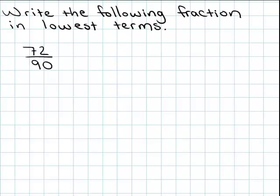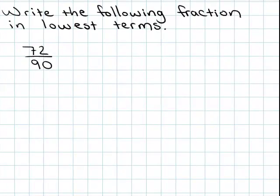Today we are going to write the fraction 72 over 90 in lowest terms. We are going to do this by writing the prime factorization of 90 and the prime factorization of 72. Let's start off by finding the prime factorization of 90.